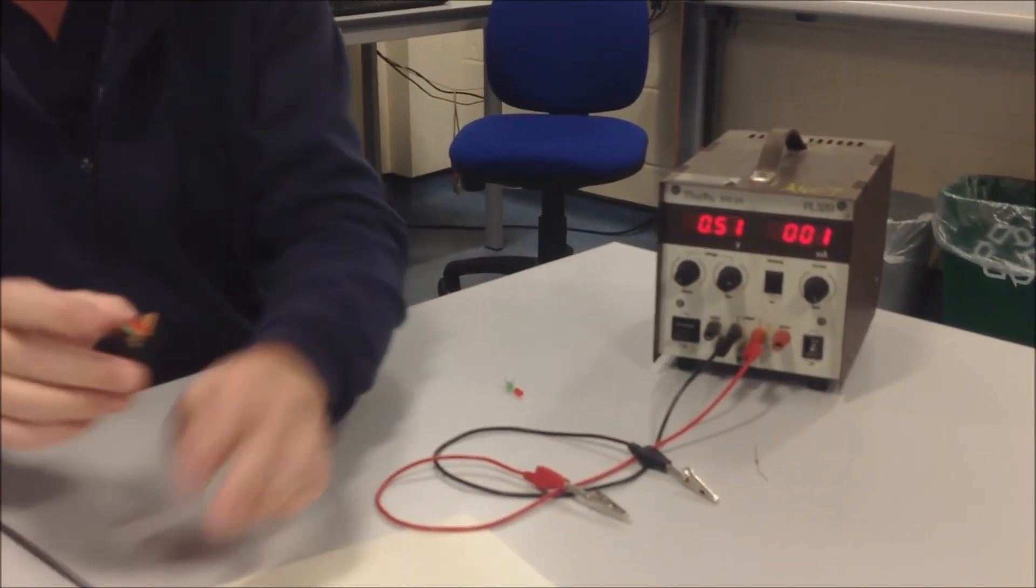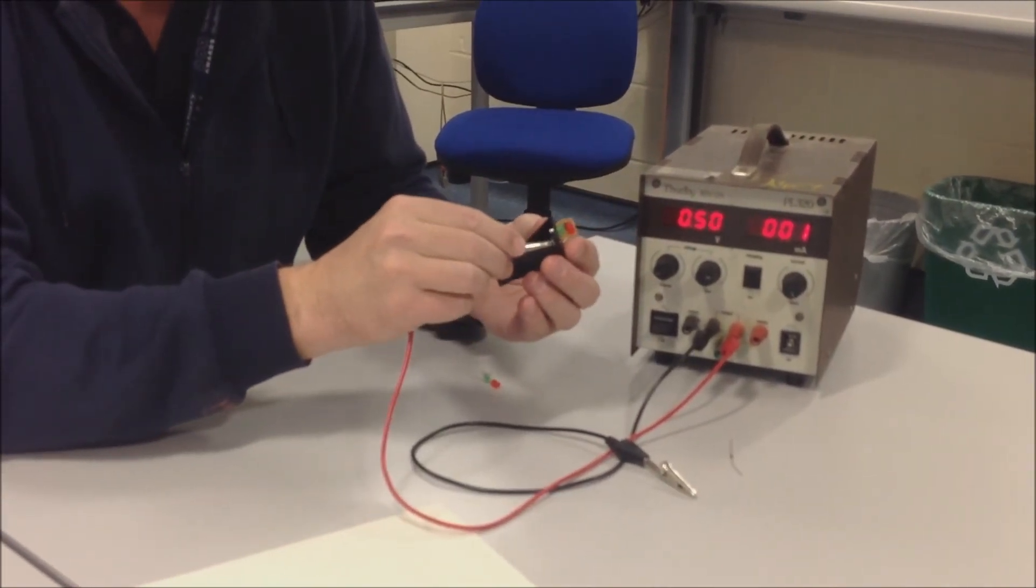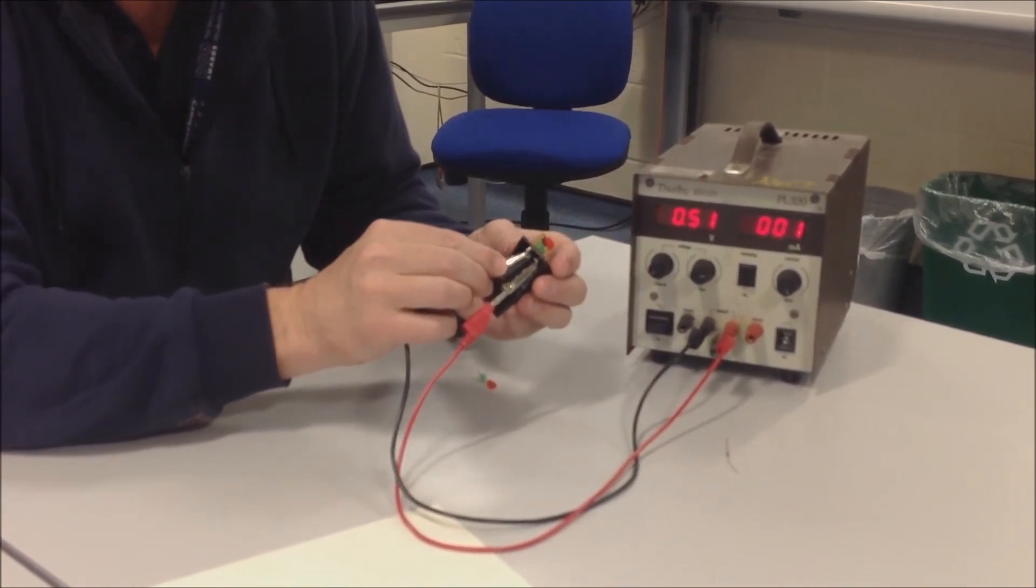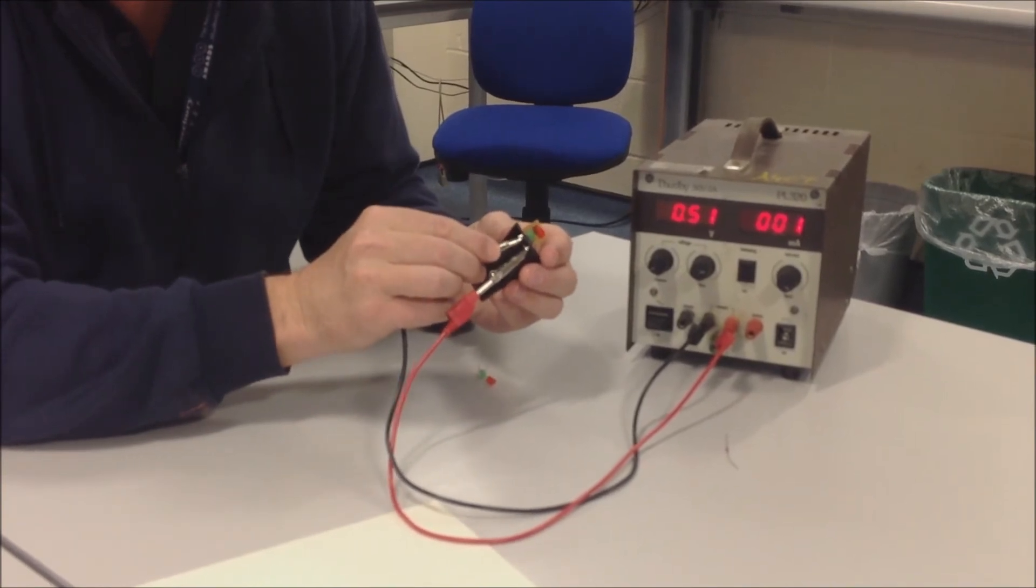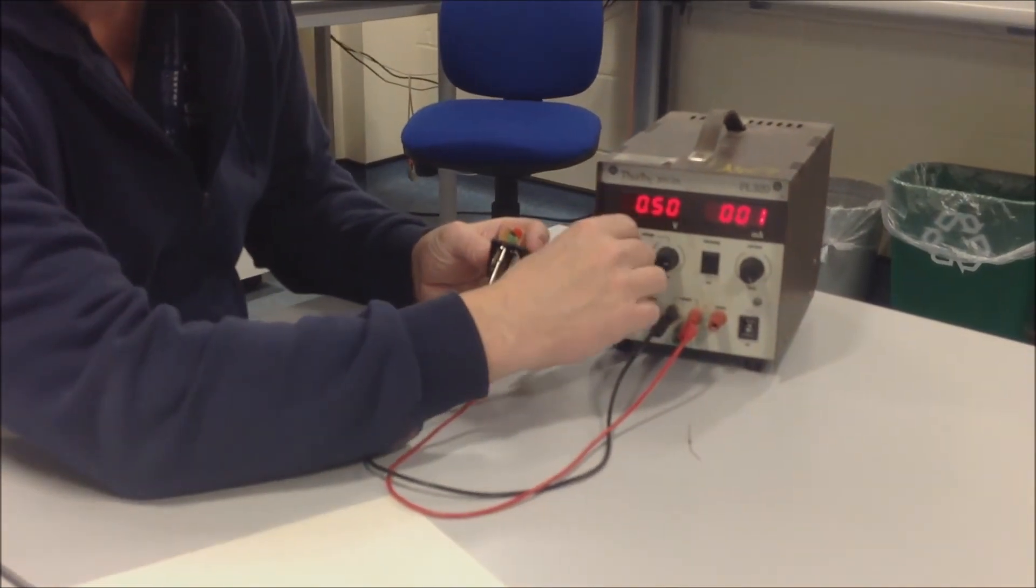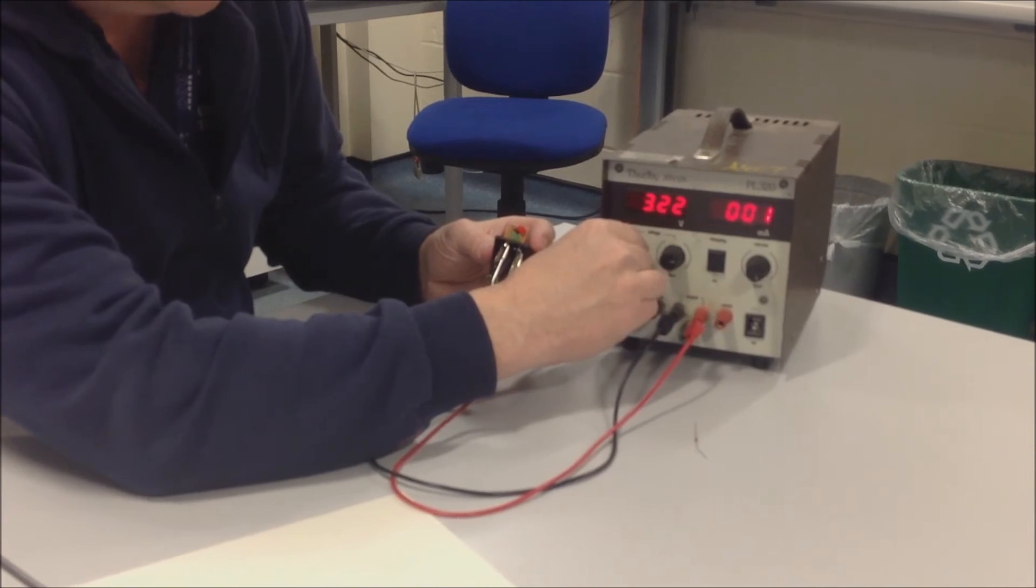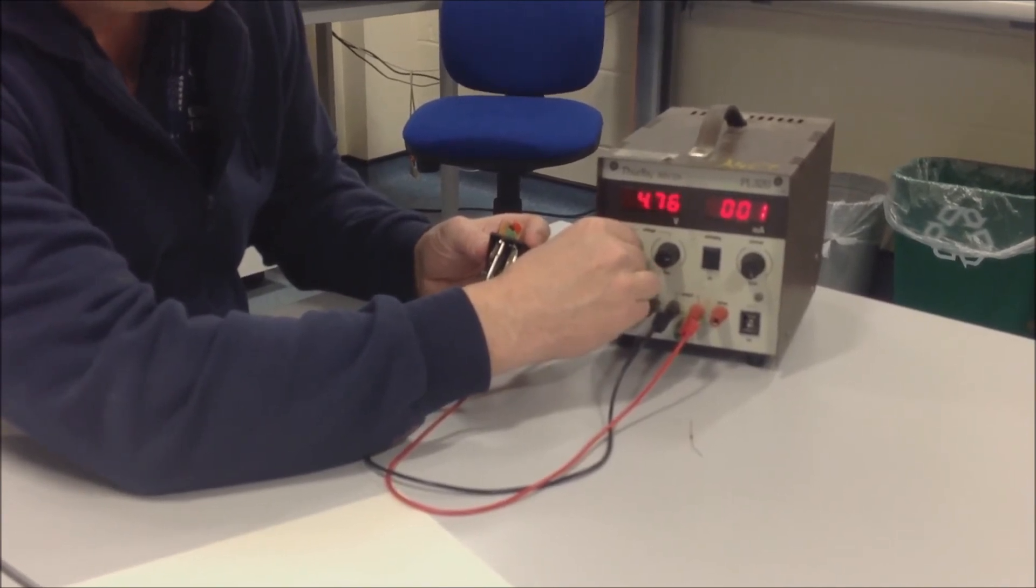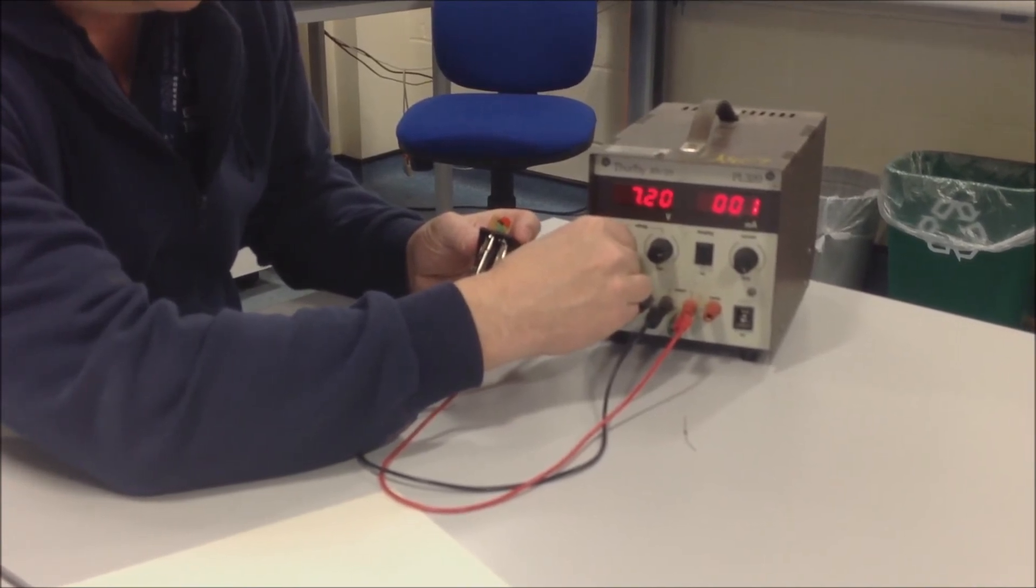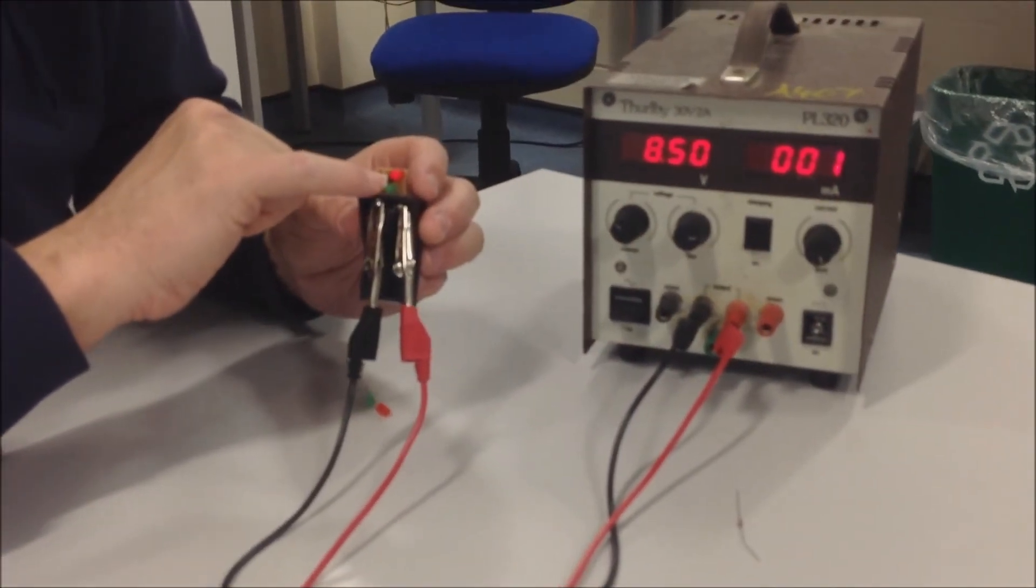we're going to connect our battery tester here, the positive. But you'll see that as we raise this voltage here, you'll see the voltage at which the red one lights. I don't want to go too quick. Come on. Just about, at about 8.5, you just get a little bit of glow on the red one.